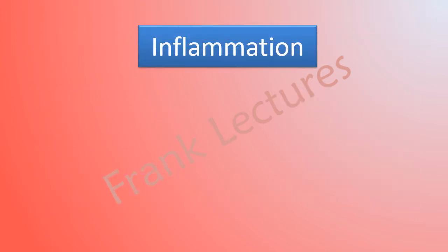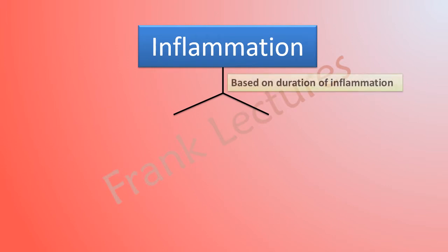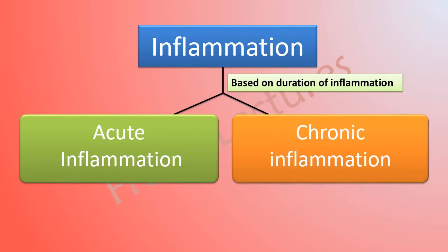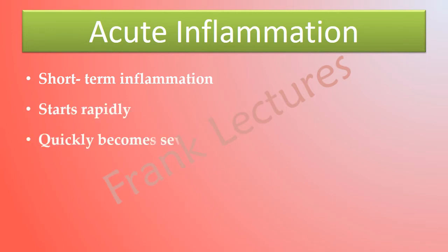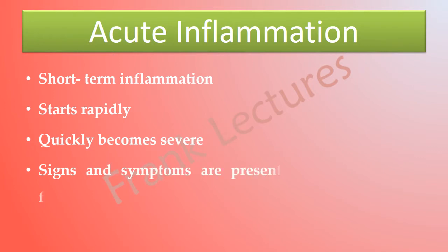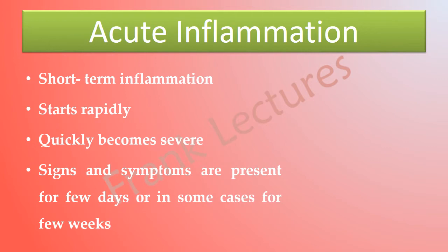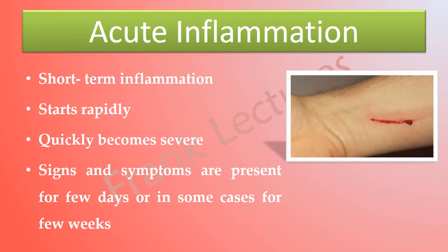Based on duration, there are two types of inflammation: acute inflammation and chronic inflammation. Acute inflammation is a short-term inflammation that starts rapidly and quickly becomes severe. It can develop in minutes or hours, with signs and symptoms present for a few days or in some cases a few weeks. A scratch or cut in tissue is an example of acute inflammation.